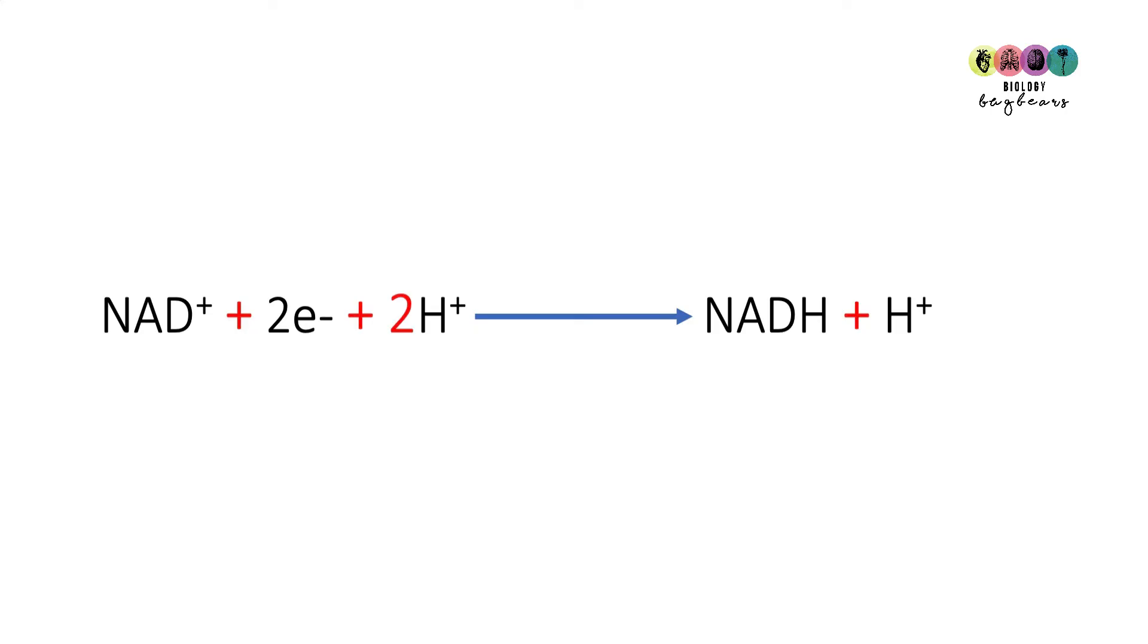To make our equation perfect, we have to account for that one other proton. Remember, we're talking about pairs of hydrogen atoms, two electrons and two protons. So there's one other proton that needs to be added into the equation.